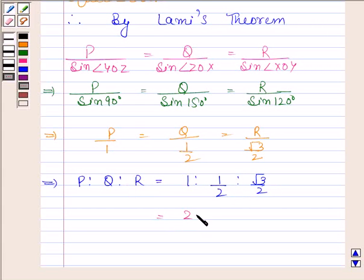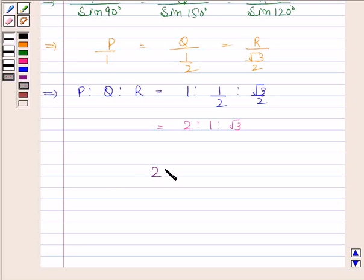So, this is equal to 2 to 1 to root 3. The ratio between the magnitudes of the forces is 2 to 1 to root 3.